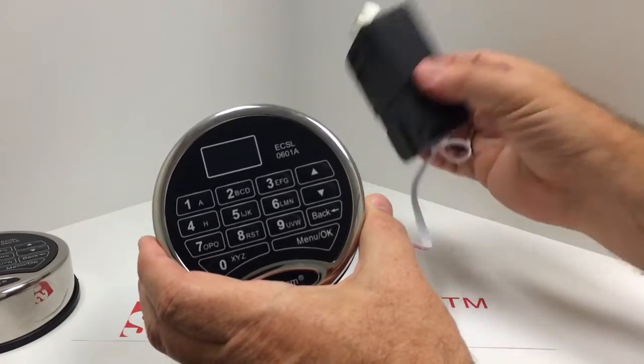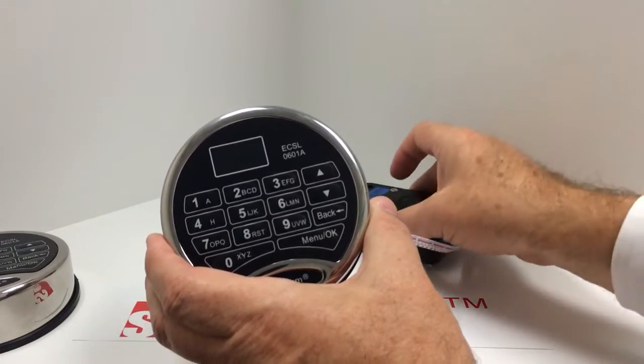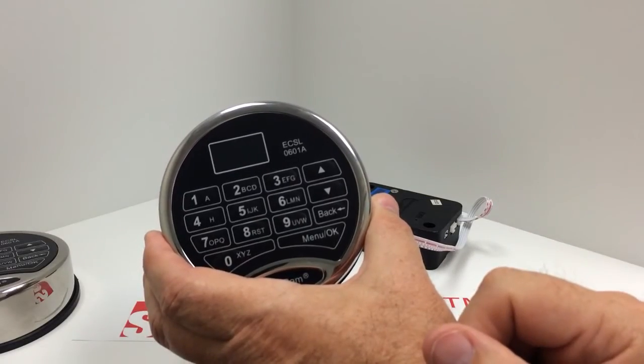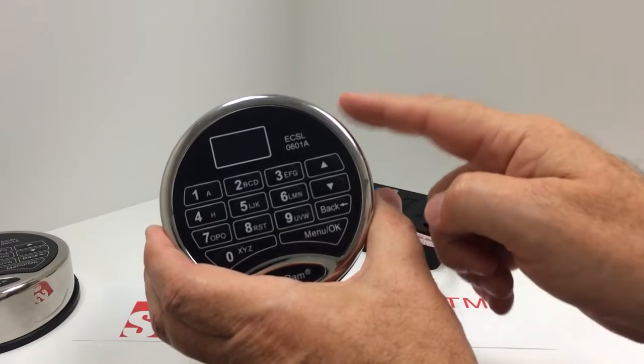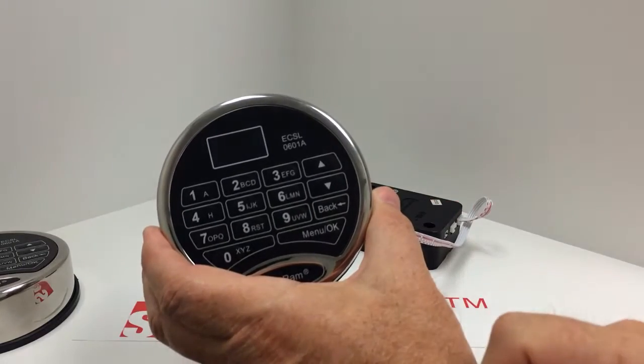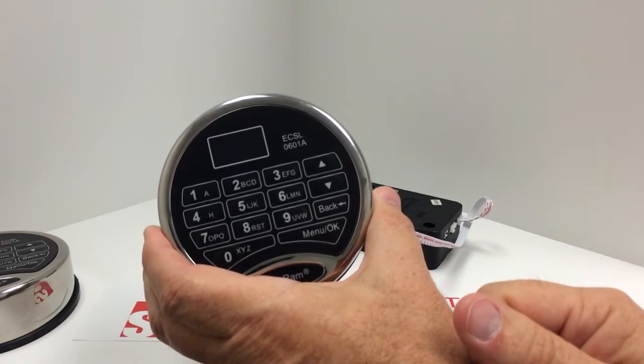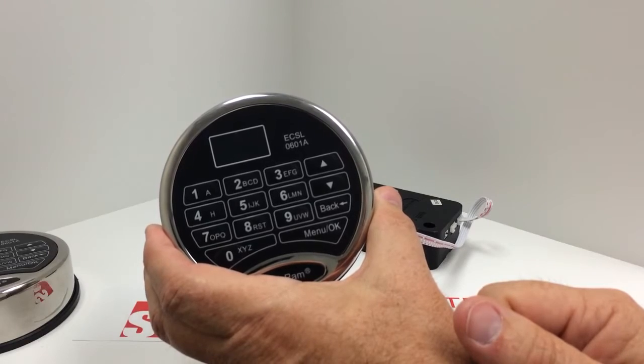So because this lock body previously used to open with 6, 5, 4, 3, 2, 1 and this entry pad doesn't recognize that, we have a mismatch between what's stored here and what's stored here. It doesn't allow you to open that lock with the existing code of 6, 5, 4, 3, 2, 1.